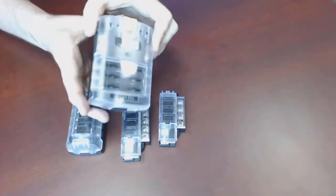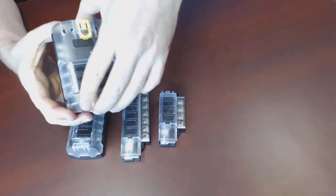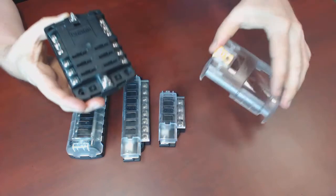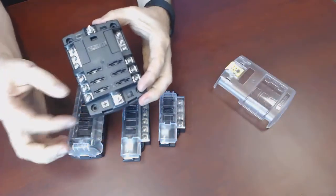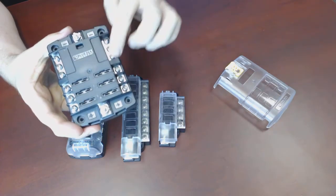If you know Blue Sea at all, you're very familiar with the model 5025 and its bigger cousin. The 5025 has power in and six fuse positions out, and it also has ground, and you can use these as common ground rails.